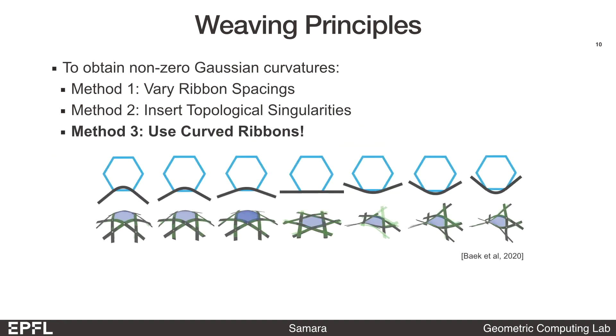A third method to introduce curvature is to use ribbons that are curved in their planar rest states. For example, in the set of modules here, if the ribbons bend away from the hexagon, then the patch will have positive curvature. If the ribbons bend towards the hexagon, then we get patches with negative curvature. Compared to the previous two methods, changing the ribbon planar shapes changes the 3D curvature smoothly, but still covers a good range of positive and negative curvatures.